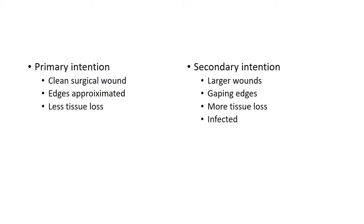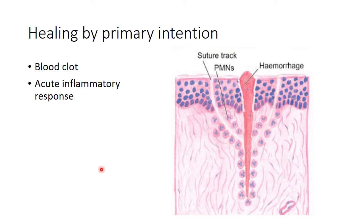Healing by first intention or primary union is when the wound is a clean surgical wound — it is surgically incised, there is very little tissue loss, and the edges are approximated with surgical sutures. On the other hand, healing by secondary intention is when the wound is larger with a very large tissue defect, sometimes even infected, and the edges are not approximated with sutures — the edges are gaping.